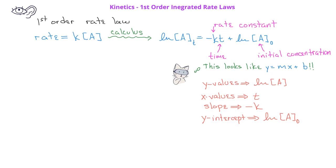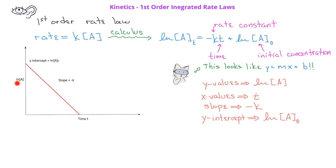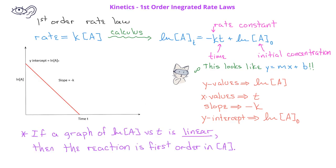If we use the equation in this form, we can make a graph of the natural log of A versus time, and if the reaction is first order with respect to the concentration of A, we should see a straight line.